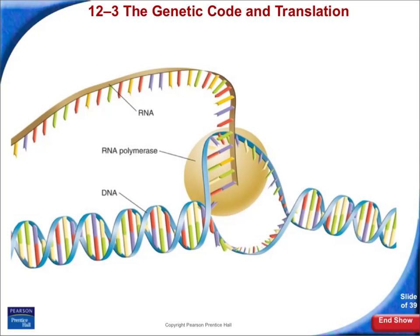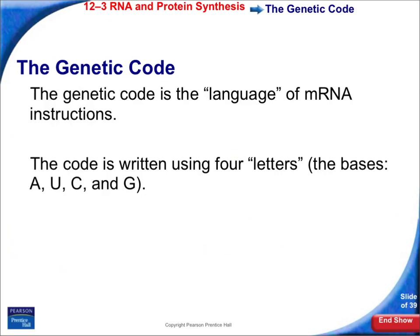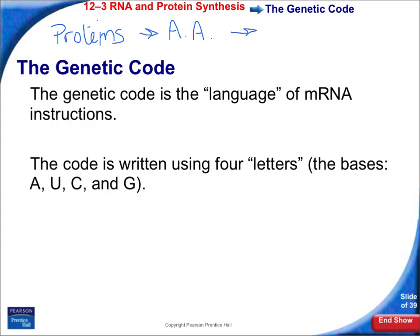The last part of section 2-3 deals with the genetic code and translation. Remember that we talked about proteins being a very important molecule. Proteins are made up of monomers called amino acids. Basically, a protein is a long strand of a bunch of amino acids linked together, and we call this a polypeptide chain.